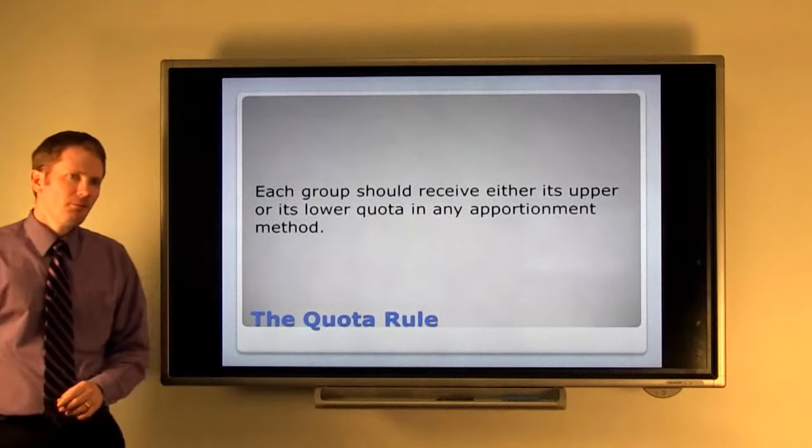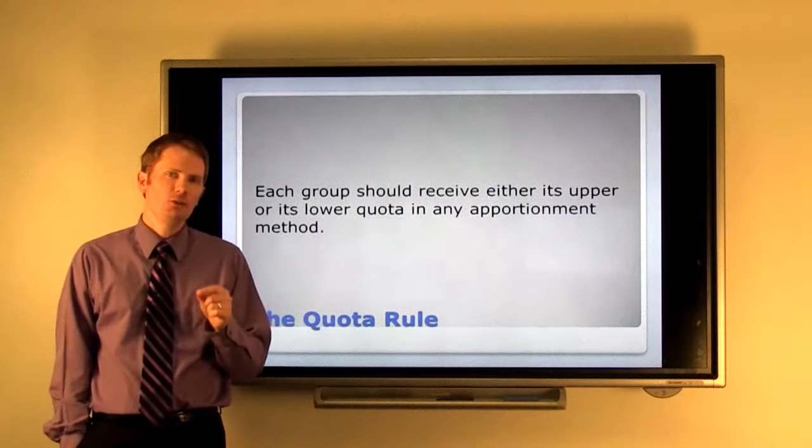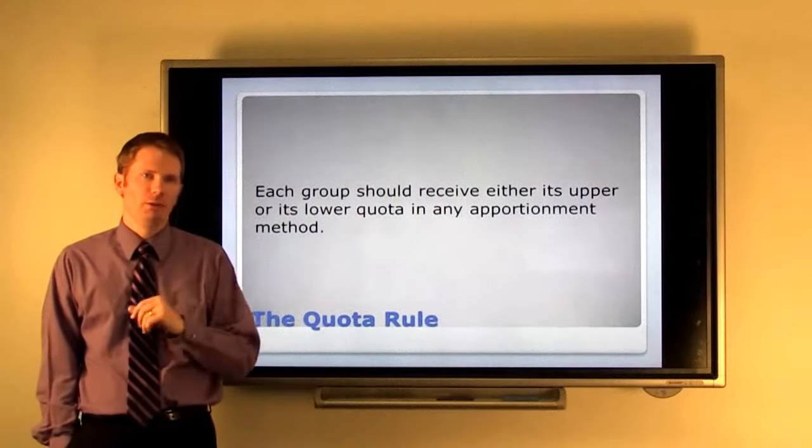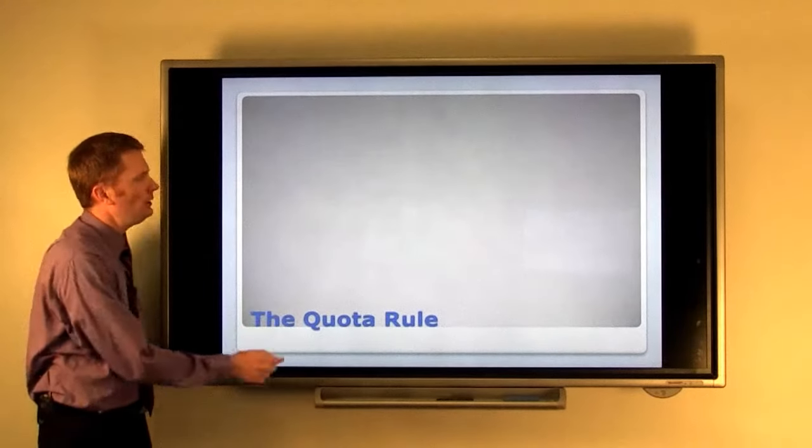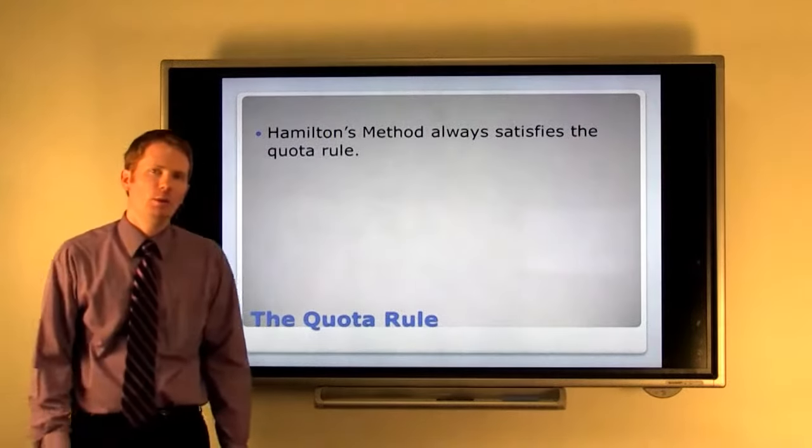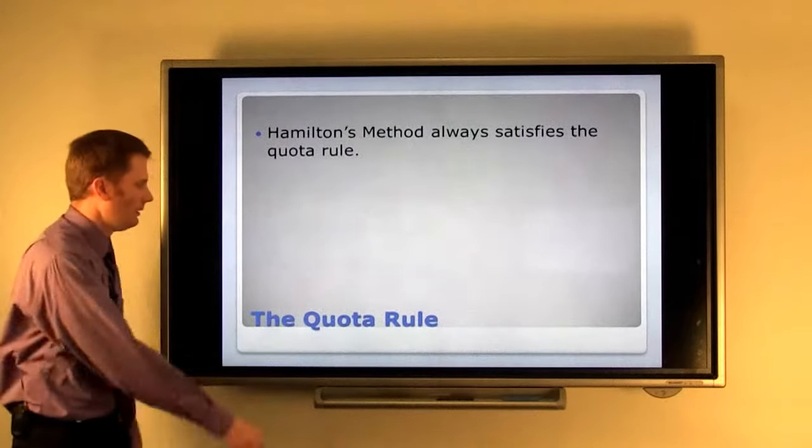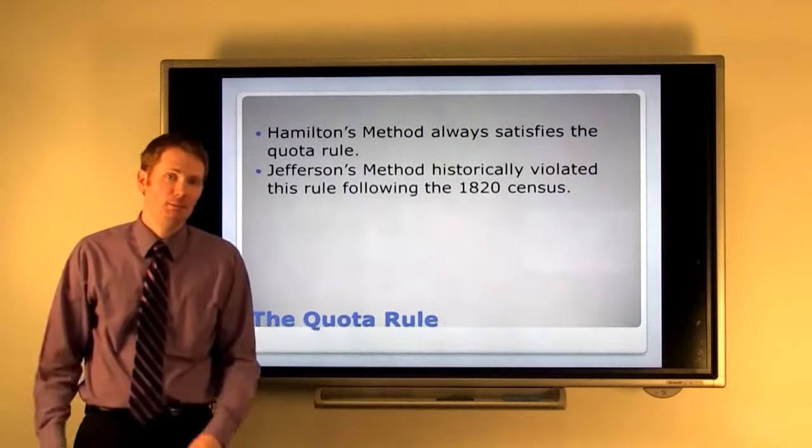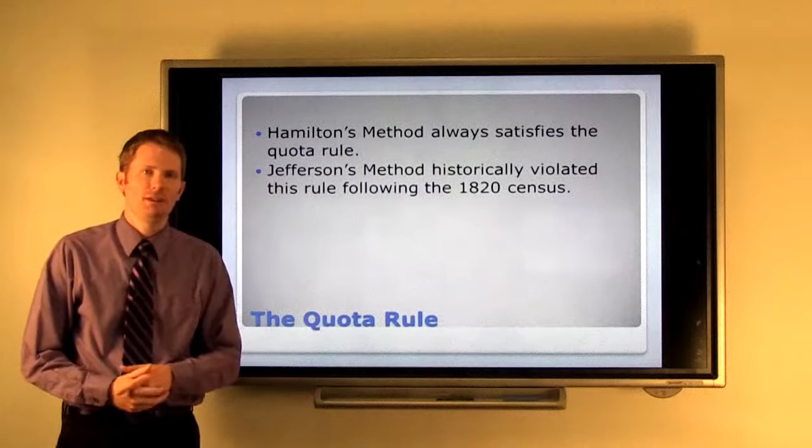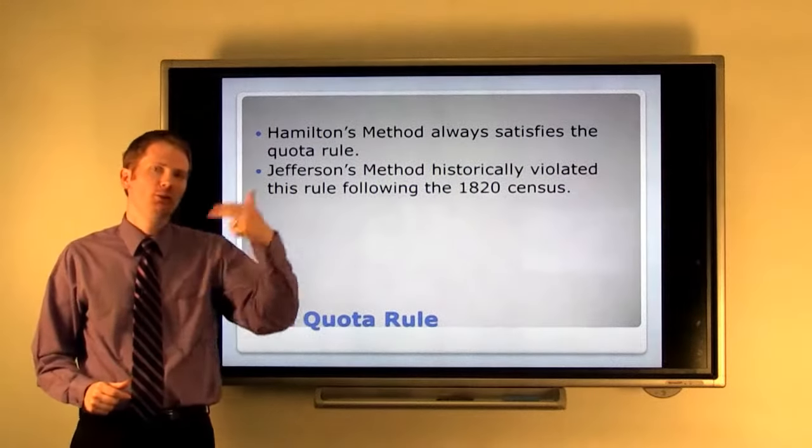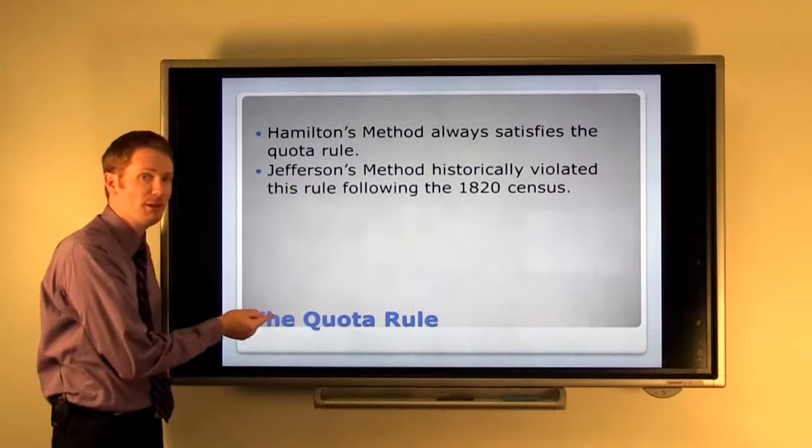The quota rule. Most political scientists and mathematicians believe that when you're doing apportionment, each group should receive either its lower quota or its upper quota. It doesn't make sense for a group to get more than one of those two things. The beauty of Hamilton's method is that it always satisfies the quota rule. There will never be a state that would get more than its upper quota or less than its lower quota. Unfortunately, that's not the same with the other methods. In fact, Jefferson's method actually violated the quota rule following the 1820 census, where one state got two above its lower quota, and the rest of the states cried foul. And that's one of the reasons Jefferson's method was discontinued for use.